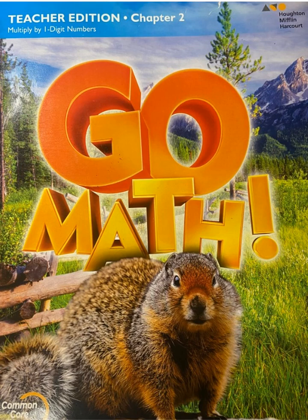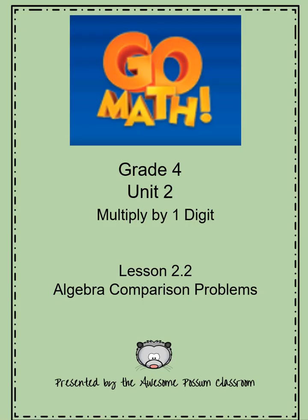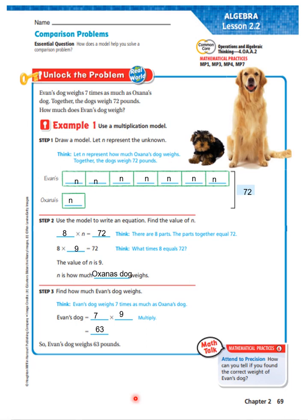Welcome back to Grade 4 GoMath. This is GoMath Grade 4 Unit 2, multiplied by one digit, Lesson 2.2: Algebra Comparison Problems. Before we begin, make sure you have your wipe board or paper because you will be drawing models to solve these problems. Our essential question is: how does a model help you solve a comparison problem?